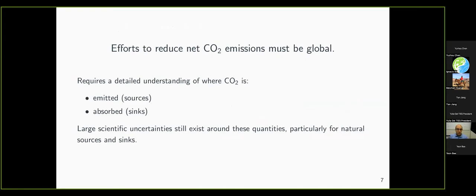Efforts to reduce net carbon dioxide emissions must be global. We need to know where the emissions are, where the sinks are, and the strength of both. You might think that by now we have a good understanding of which regions are the biggest sinks of carbon dioxide, but there's still lots of uncertainty — for example, the extent to which oceans are sinks, what's happening in the extratropics with the big seasonal cycle, and how much the biosphere is absorbing CO₂. The biosphere is, fortunately, a net sink, but we are emitting much more than what the biosphere is absorbing.